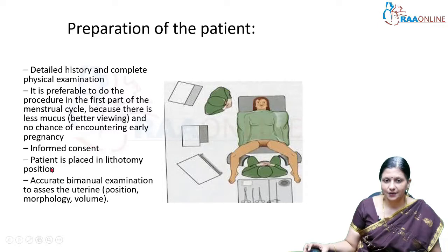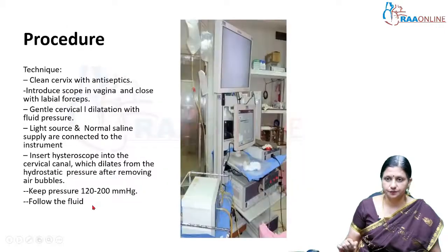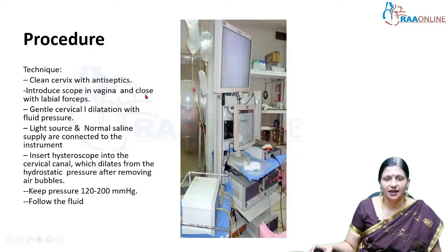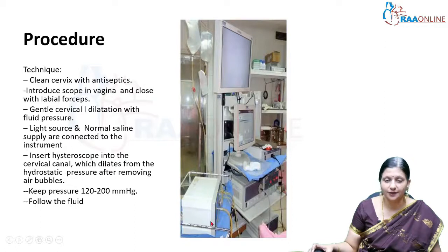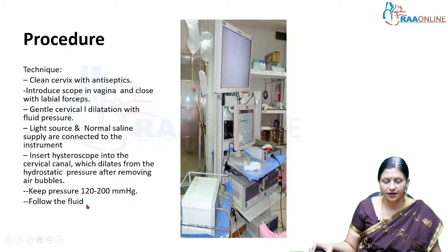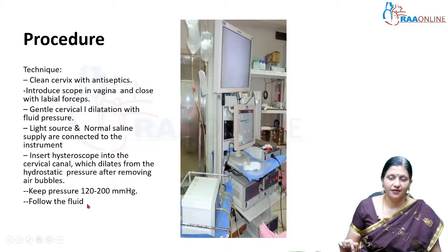We should have informed patient consent, place the patient in lithotomy position, and do a per vaginum examination to ascertain uterine size, uterine position, and any adnexal masses. We clean the cervix with antiseptics, introduce the hysteroscope into the vagina, close the vagina with labial forceps, and gently dilate the cervix with fluid pressure. The light source and normal saline supply are connected via a hysteromat. Insert the hysteroscope into the cervical canal, maintaining pressure between 120 to 200 mmHg.